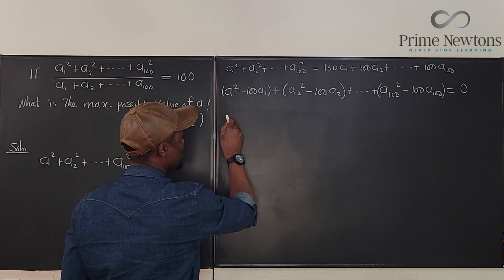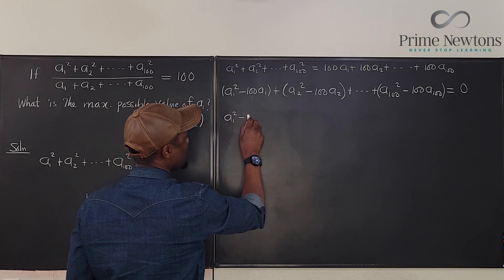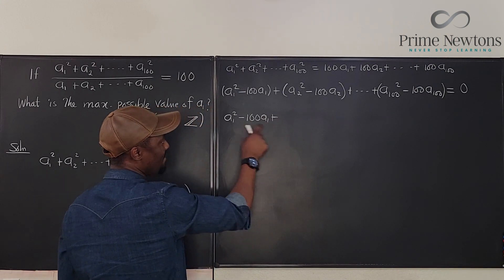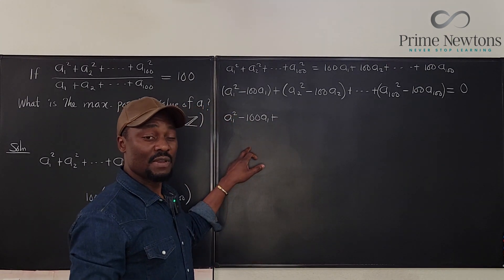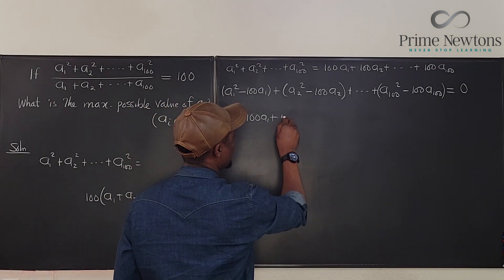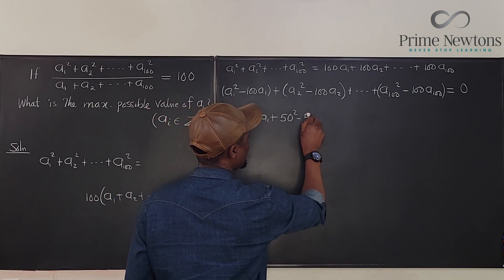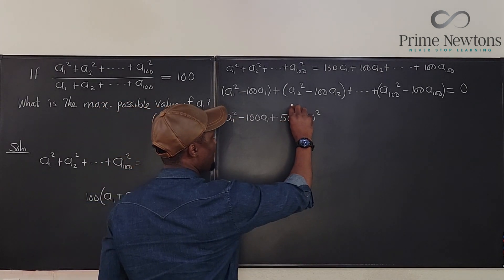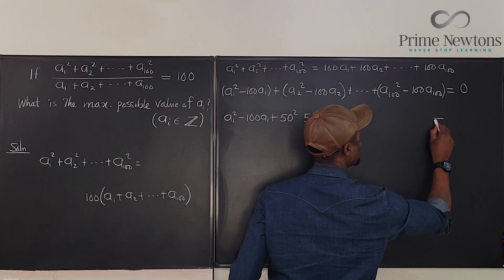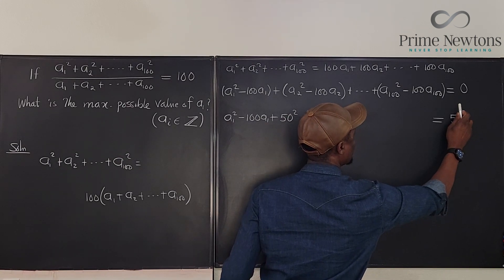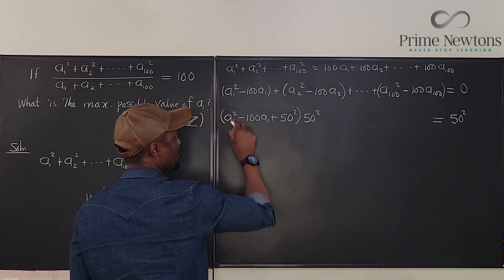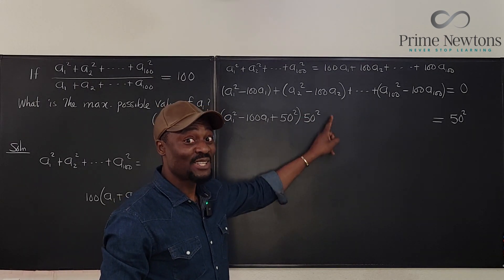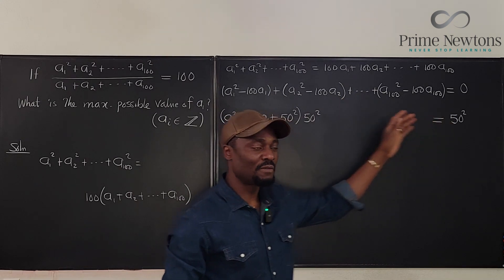This is going to be A1 squared minus 100 A sub 1 plus, I'm going to add half of this, which is 50. What's the square of 50? I'm just going to write 50 squared minus 50 squared. So I haven't changed anything here. But what I'm going to do now is if I move this minus 50 squared to the other side, it will become 50 squared. So this minus 50 squared, I've moved it over to the other side, and I'm going to do the same thing to this guy, and it's going to be another minus 50 squared coming from here. I'm going to move how many of them? 100 of them.